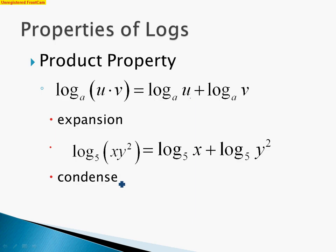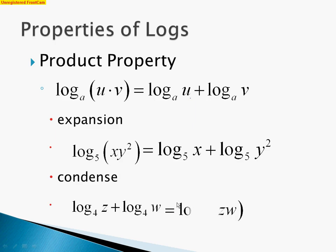Now condensing this working backwards: if we have log base 4 of z plus log base 4 of w, the addition implies the multiplication that was going on. So we can write this as one logarithm. When condensing back down, we need just one logarithm in our answer, and that's just z times w. That's the product property.